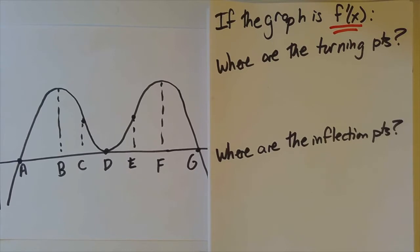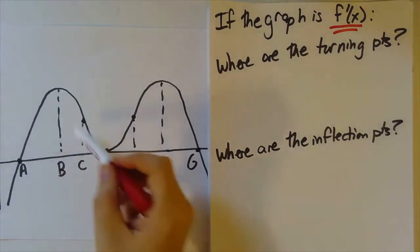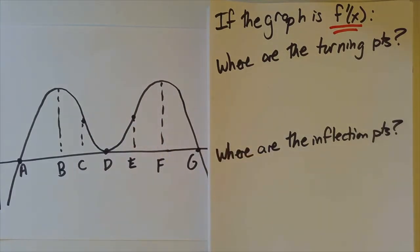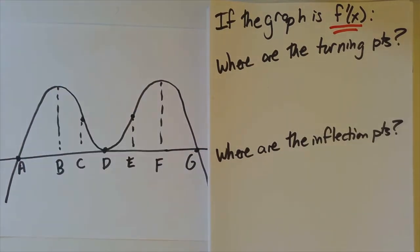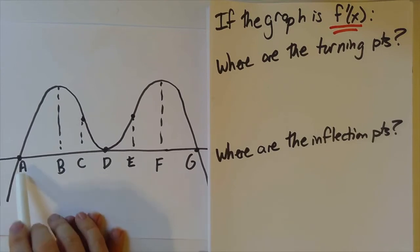Let's start with turning points, and let's start with what does increasing look like in a graph of the derivative. Increasing means positive derivative. So if I'm looking for the spots where the function is increasing — remember, this is not the function, this is the derivative — I'm only looking for the spots where the derivative is positive. That means the function is increasing all the way from a over to g. So all of this in the middle corresponds to places where the function is increasing.